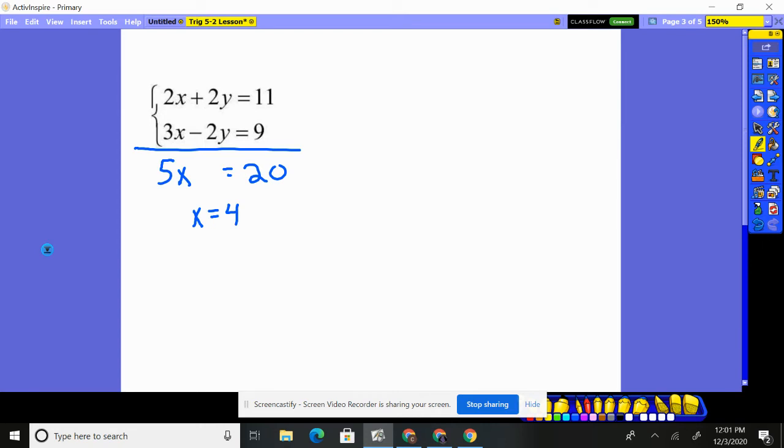So, we use this idea of elimination when we don't have it of the form y equals. We're not going to use substitution. And we're sort of in standard form, to be honest. So, we get x is 4. How am I going to get y?